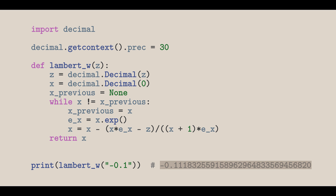This result is branch 0 of the Lambert W function, but it has another real branch at approximately negative 3.5. To compute this branch, we change our starting value for x to be closer to negative 3.5. This is also true for complex branches, but that would require complex arithmetic that isn't available in the decimal module. So I'll leave that as an exercise to the viewer to come up with a program that can compute all branches of the Lambert W function.